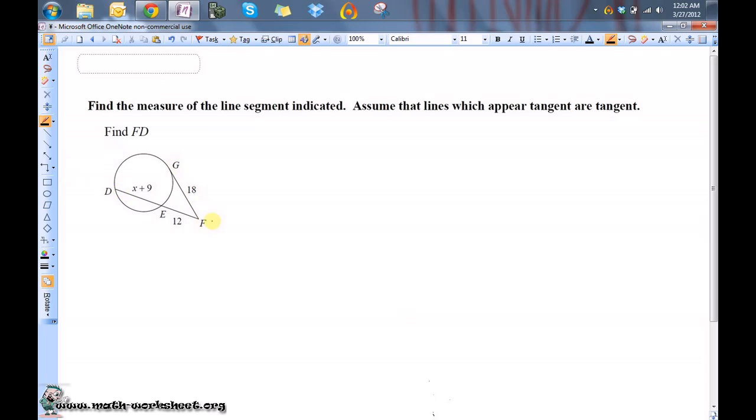Here we have a circle with a secant line and a tangent line and they both intersect outside of the circle. To be able to solve this problem we need to know the following relationship.